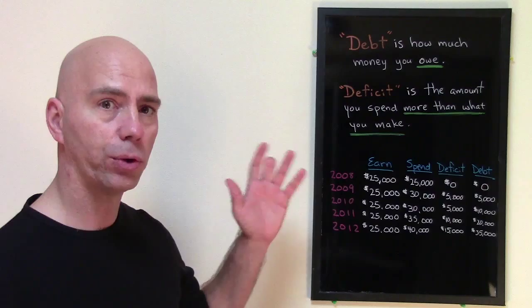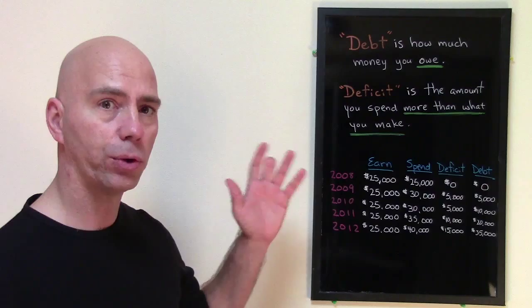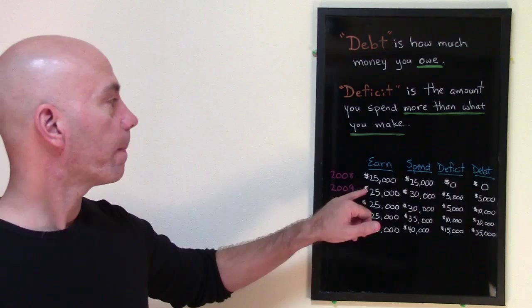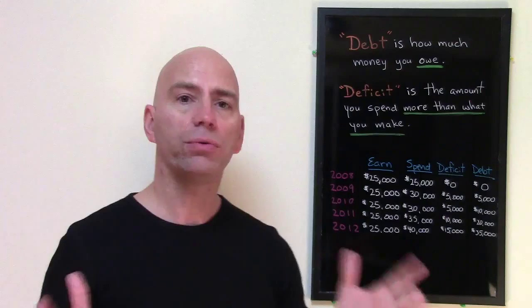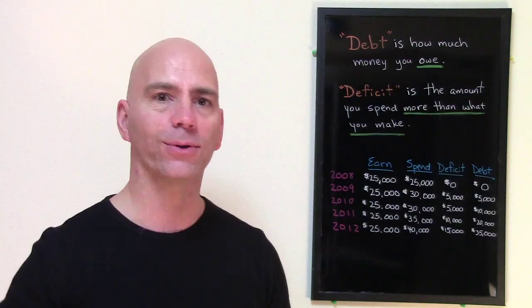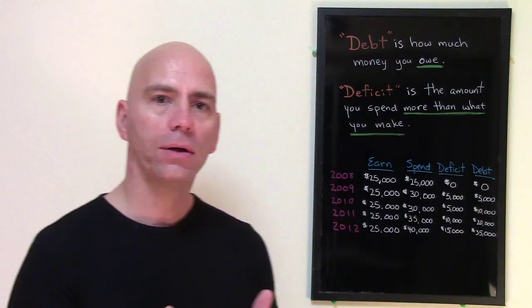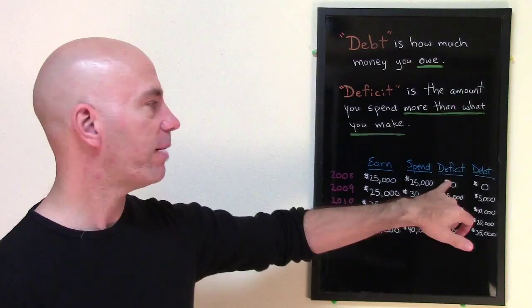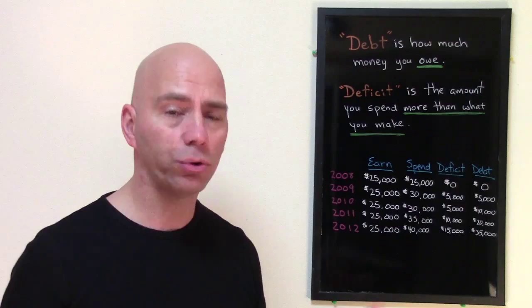So here in 2008, let's say you earned $25,000. You also spent $25,000, which means you didn't borrow any money from your credit cards or from your parents or from your children. You spent the same amount that you made. That means you have a zero deficit. You also have no debt — you don't owe anyone any money because you didn't borrow any.